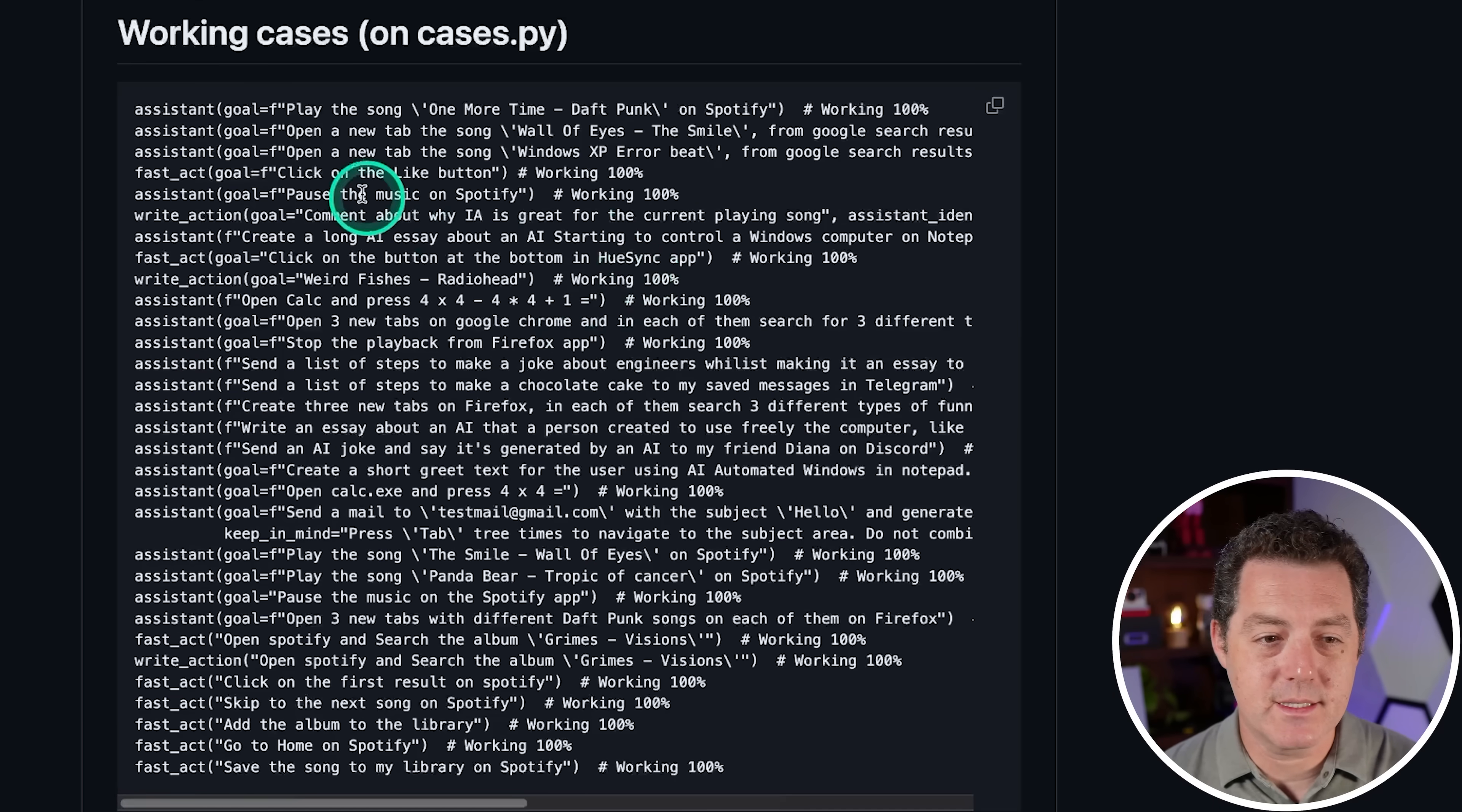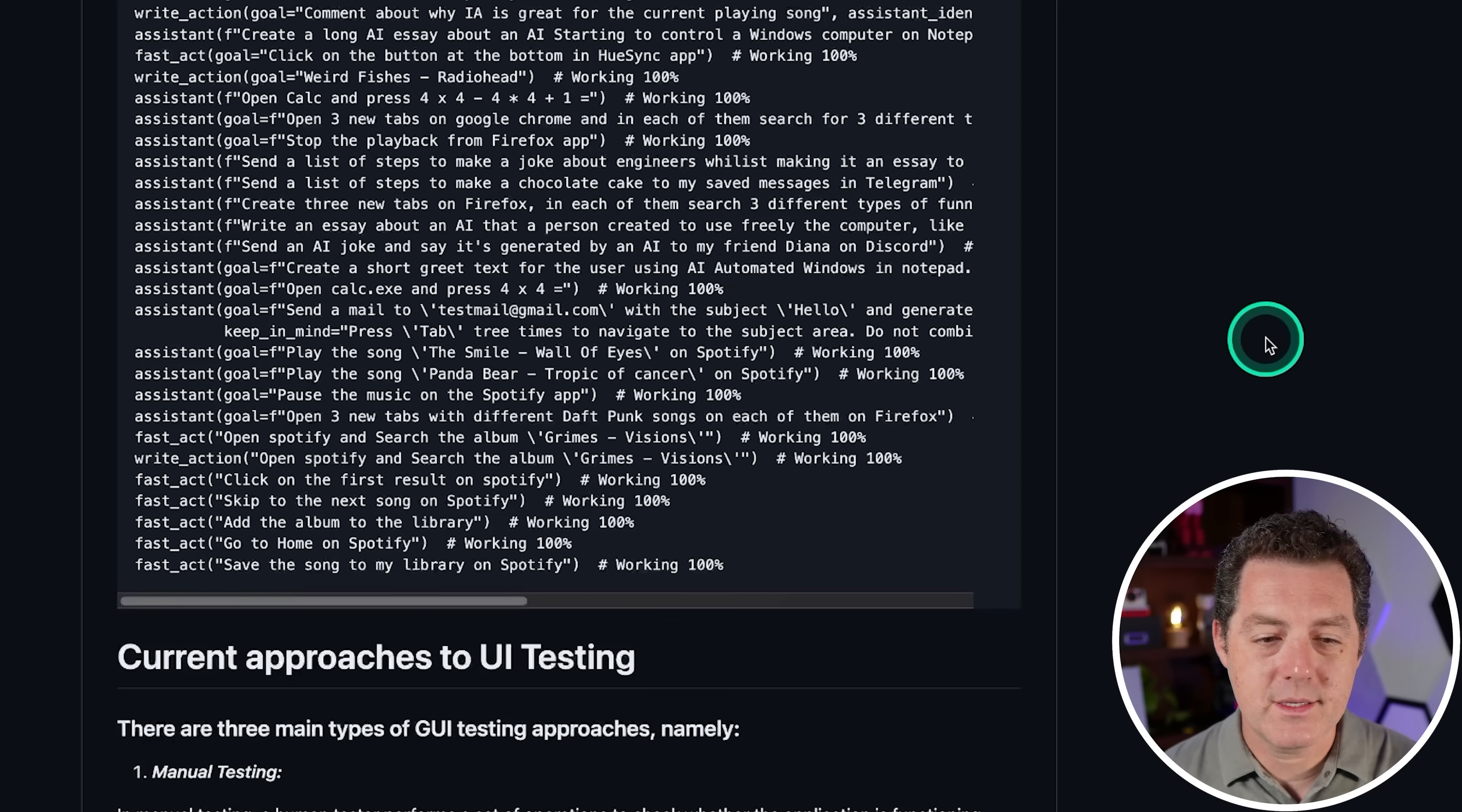So let's look at some of the cases. These are proven cases, working cases. So open a new tab with the song, click on the button, send a list of steps to make a joke about engineers whilst making it essay and so on and so forth. So it's actually a lot of really cool implementations of this. So I encourage you to check this out. Read the research paper if you're interested. If you want to see me do a full tutorial of PI Win Assistant, let me know in the comments. I'm happy to do that. If you enjoyed this video, please give a like and subscribe, and I'll see you in the next one.